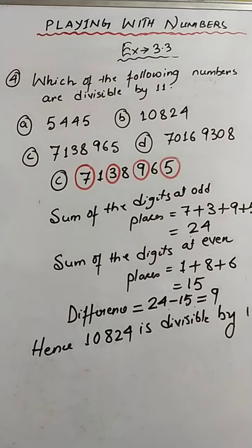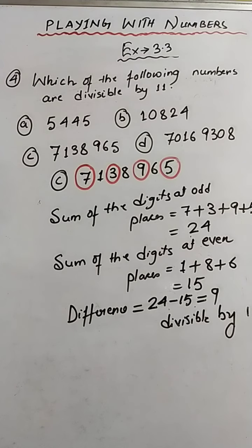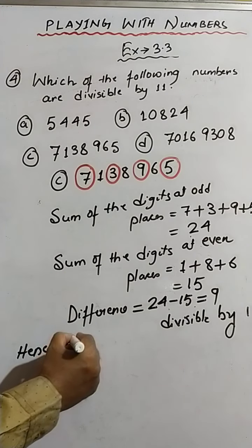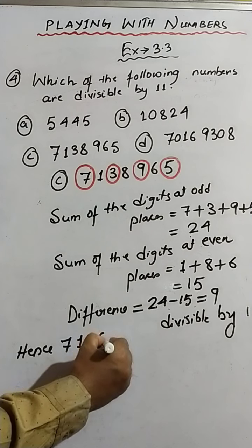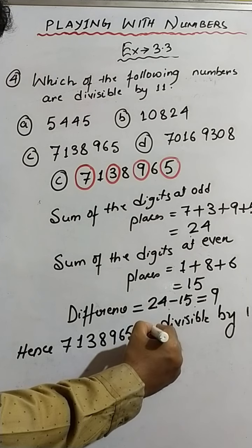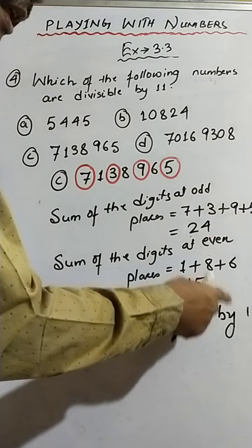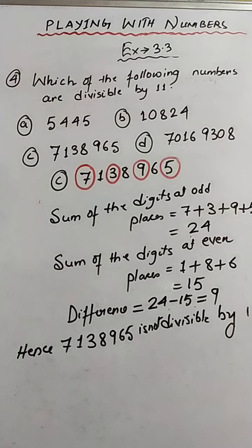This time neither 0 nor 11 is coming. So 7138965 is not divisible by 11, because the difference should have come 0 or 11, but this time we are getting 9. So the required number is not divisible by 11.